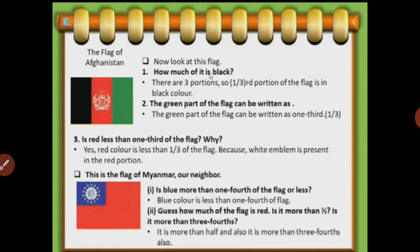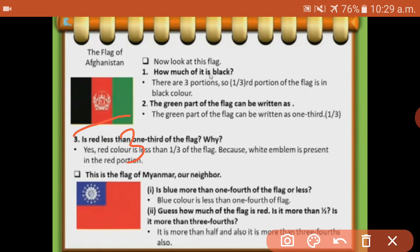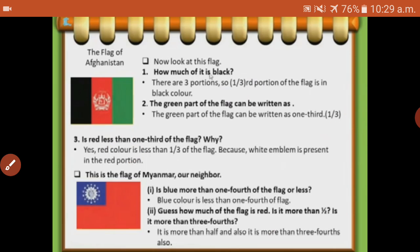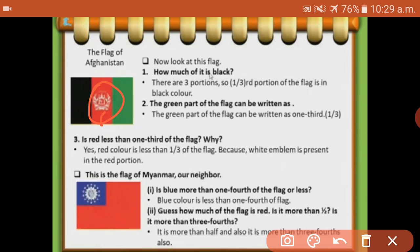So all portions are 3. How much of the portion is black color? Only one portion. So the answer is 1 by 3 for black color. Green portion is also 1 by 3. The green part of the flag can be written as 1 by 3. Is red less than 1 by 3? Yes, because a white emblem is present in the red portion, which makes it less than one-third.